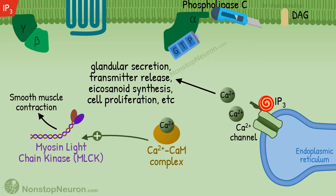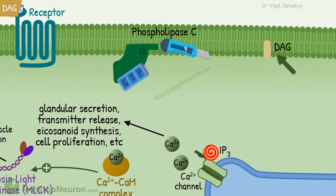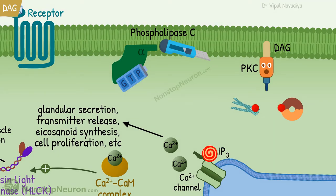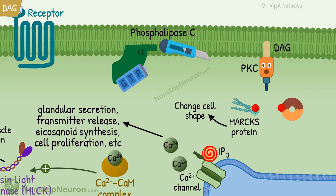Those are the effects downstream of IP3. DAG remains in the membrane and activates protein kinase C. This is similar to PKA seen in the cAMP pathway — it phosphorylates various proteins and modulates their activity, producing different responses in different cells. For example, myristoylated alanine-rich C kinase substrate proteins, also known as MARKS proteins, contribute to changing cell shape, and transcription factors affect gene expression.